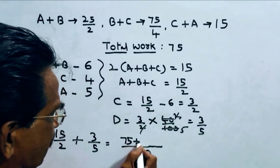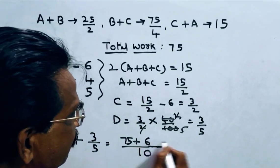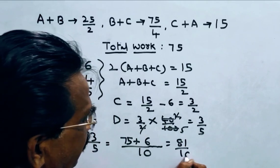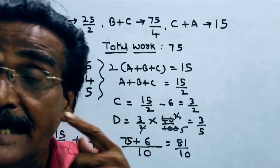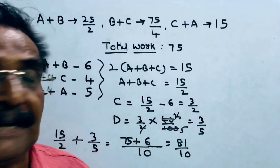75 plus 2, 3, 6, 81 by 10 units of work per day. A plus B plus C plus D can do 81 by 10 units of work per day.